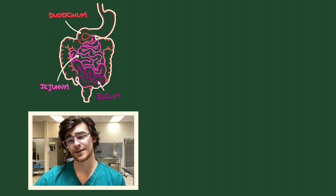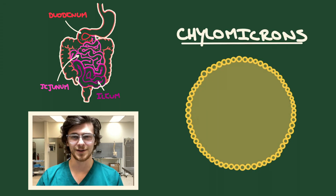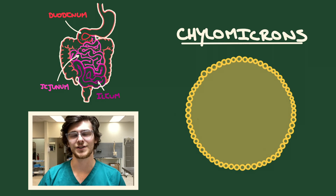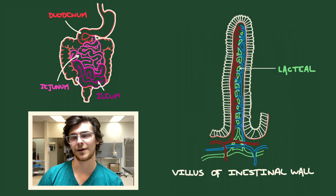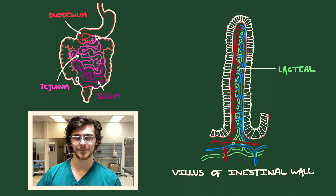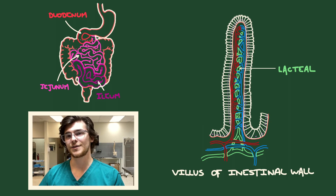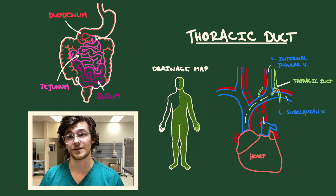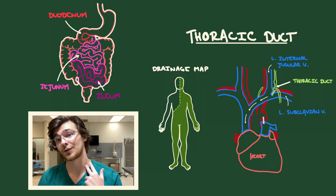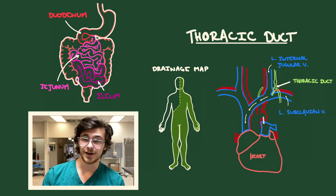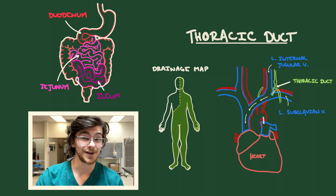All of these breakdown products are absorbed into the blood, except for fats. The constituent parts of fats are reassembled into structures called chylomicrons — transporters for fat-soluble items. These are too large to be absorbed into the capillaries, so they are instead absorbed into the lymphatic system through a lacteal. This means they bypass the portal system and enter the blood where the thoracic duct of the lymphatic system joins the venous system — at the junction of the left internal jugular vein and the left subclavian vein.